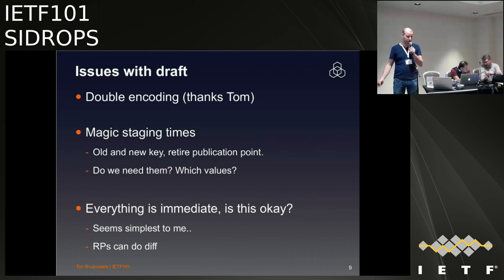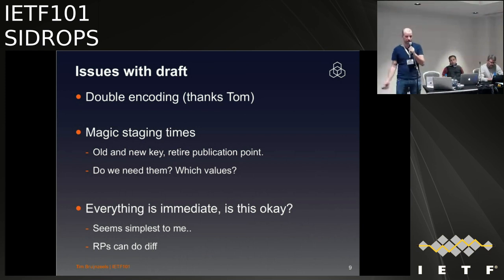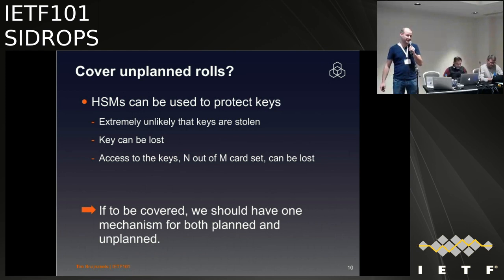There were some issues. First, there's a double encoding issue — the content of the TAL is encoded and doesn't have to be double-encoded as base64. There are magic times in here — not sure we really need them and what the value should be. Everything is immediate. Somebody suggested planning ahead and saying 'I plan to use this new thing two months from now' — to me, it seems simpler to just do it. Another point: should we actually try to cover unplanned rolls? If so, it may be a good idea to use the same mechanism for both planned and unplanned rolls — one way of doing things.